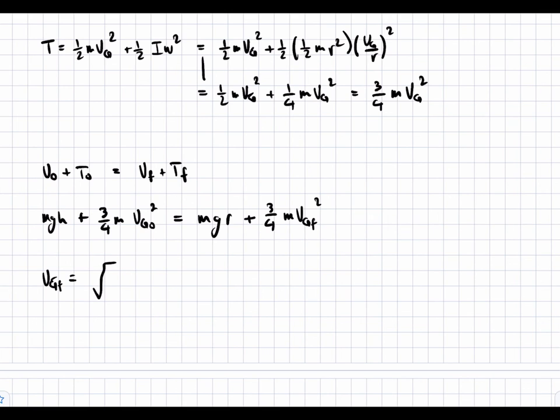So, vgf is equal to the square root, and I'm going to start plugging in values. 9.81 meters per second squared times 4 meters minus 0.5 meters. So, with this, I have condensed these two terms into one, where this is h and this is r, plus three fourths times vg0 squared,